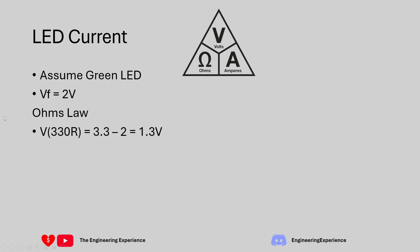Using Ohm's law, we have a 330 ohm resistor. We're going to assume the transistor is fully closed, so zero ohms there. The voltage drop on the 330 ohm resistor is the power supply 3.3 volts minus the forward voltage of the LED, giving us 1.3 volts. So 1.3 volts divided by 330 ohms gives us a current of 3.94 milliamps.